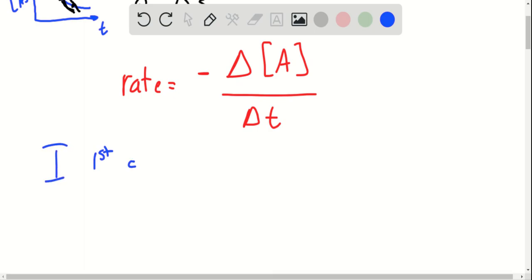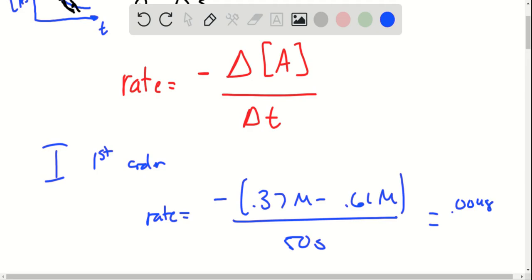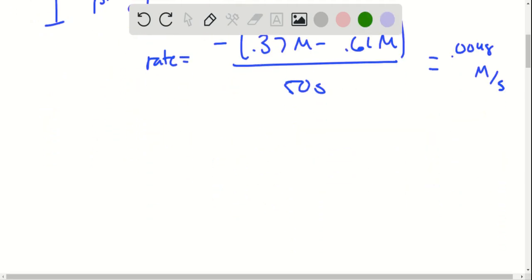which is our first order, the rate is going to be equal to negative, then 0.37 molar minus our data point at 50 which is 0.61 molar. The change in time is going to be 50 seconds. For our first order, that's going to give us 0.0048 moles per liter per second or molarity per second.